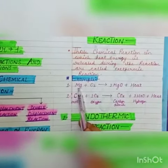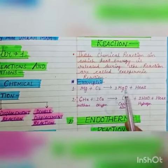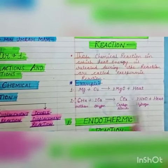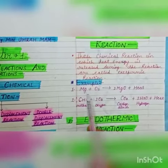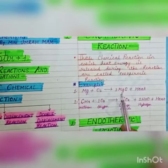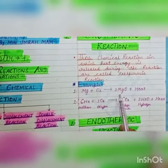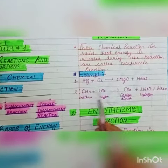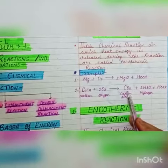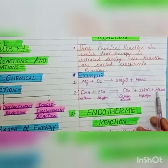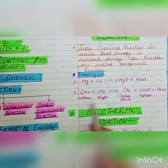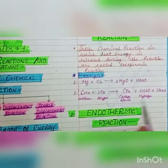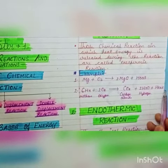For example: magnesium plus oxygen gives magnesium oxide plus heat. When magnesium reacts with oxygen, the product is magnesium oxide plus heat. Second example: CH4 plus 2O2 gives CO2 plus 2H2O plus heat. When methane reacts with oxygen, the product is carbon dioxide plus water plus heat.